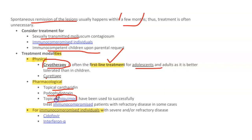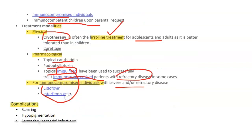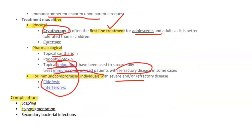Topical imiquimod is an immunomodulator that increases cytokine production and is used for refractory disease in immunocompromised patients. For immunocompromised patients with severe and refractory disease, cidofovir and interferon alpha can be used. Complications include development of scarring, hypopigmentation, and secondary bacterial infection.